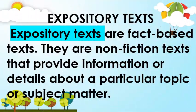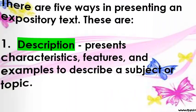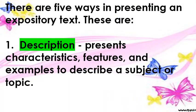Expository texts are fact-based texts. They are non-fiction texts that provide information and details about a particular topic or subject matter. There are five ways in presenting expository text. The first is description, which presents characteristics, features, and examples to describe a subject or topic.